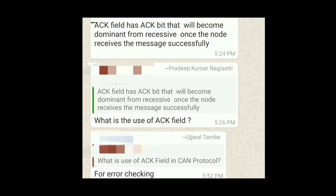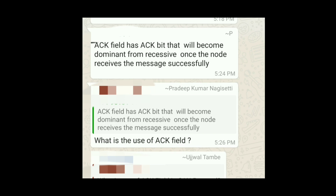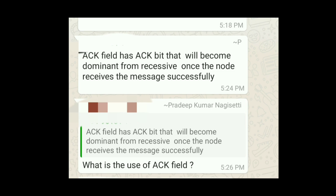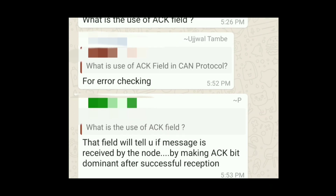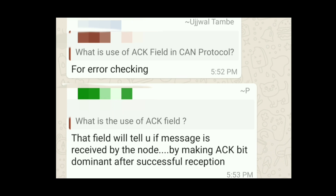What is the use of the ACK field in CAN protocol? The acknowledgement field has an ACK bit that changes from recessive to dominant once a message is successfully received. The bit becomes dominant to indicate successful reception. If the message is not received successfully, an error occurs instead. The ACK field tells you whether a message was received by the node by making the acknowledgement bit dominant after successful reception.